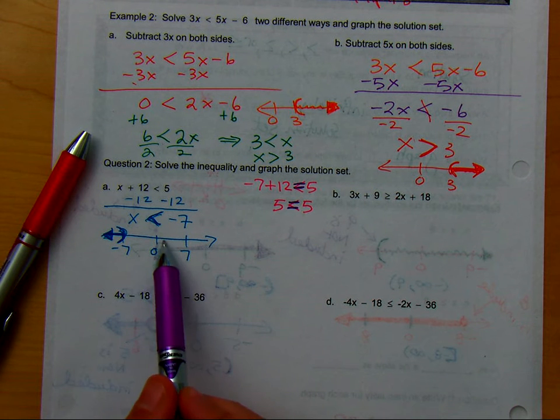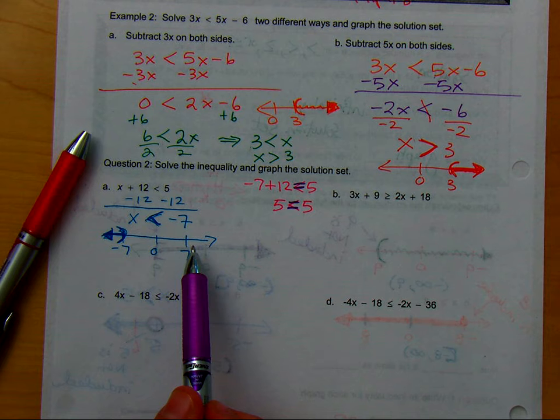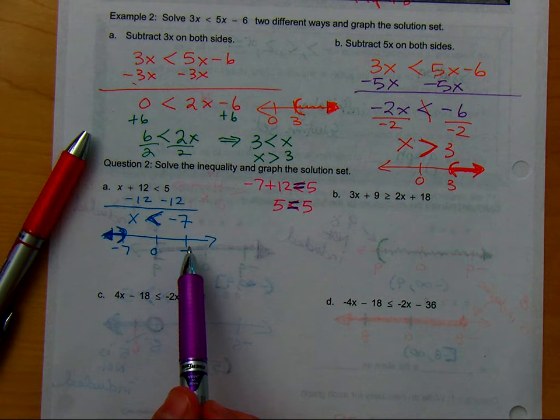Let's say you flipped it and you chose 0. Is 0 in your solution set right now, currently? Is it in your shaded area? No.